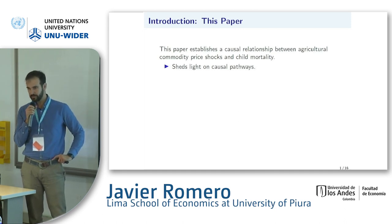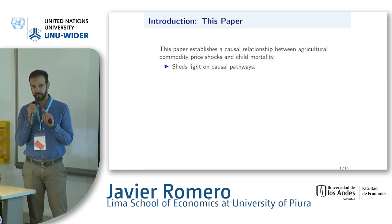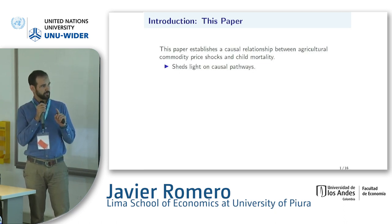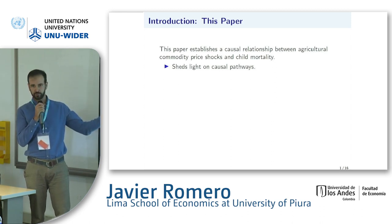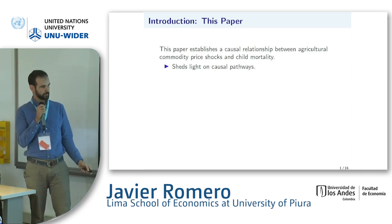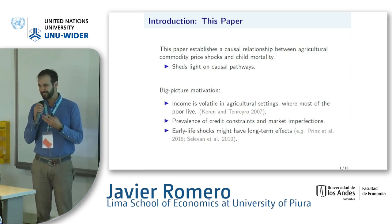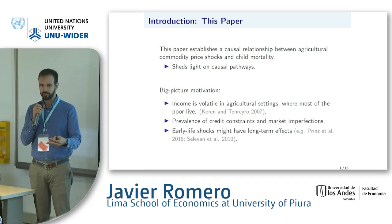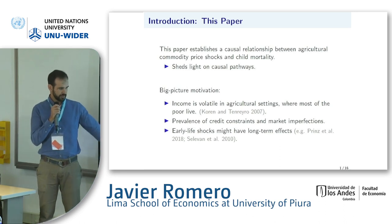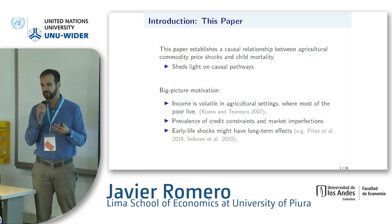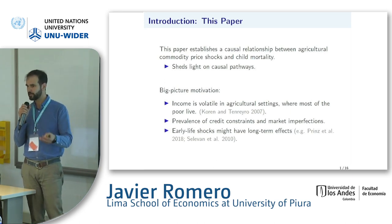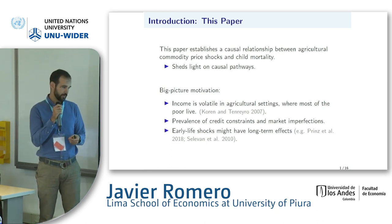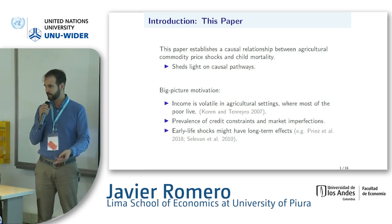The objective of this paper is twofold. The first objective is to identify a causal relationship between agricultural commodity price shocks and child mortality. The second objective is to shed some light on the pathways and mechanisms behind this. The big motivation is that income is more volatile in agricultural settings, and most of the poor live in agricultural settings. Given the prevalence of claims constraints and market imperfections, we worry that the poor will not be able to weather an aggregate income shock, and therefore welfare dimensions such as child health may be at risk.